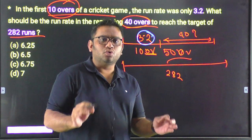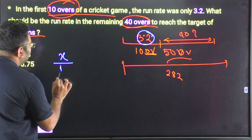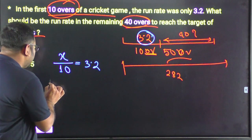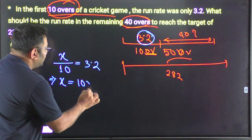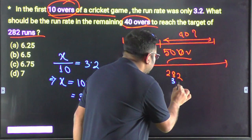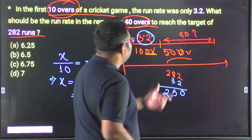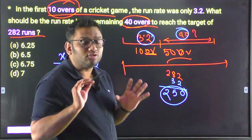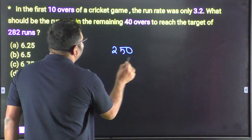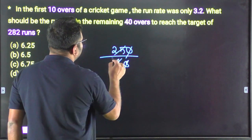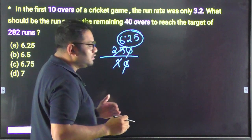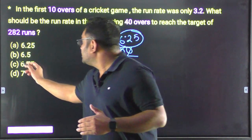Total runs scored = 10 multiplied by 3.2. The total run rate is 3.2, so total runs = 32. The target is 282, so remaining runs = 282 minus 32 = 250. We divide 250 by 40. That gives us 6.25. So the required run rate is 6.25, and we can achieve the target score of 282.